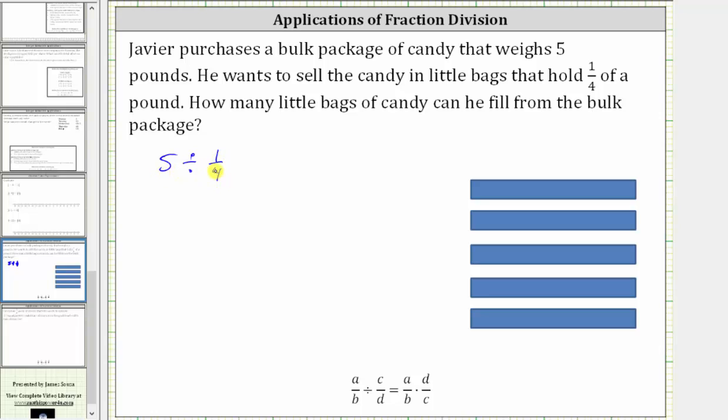And therefore, five divided by one-fourth is the equivalent to five times four over one. Four over one is just four, giving us five times four, which is equal to 20, which means Javier can fill 20 little bags of candy from the bulk package.